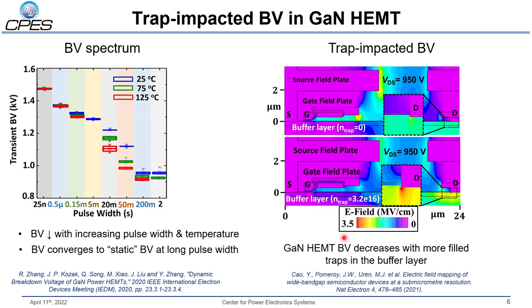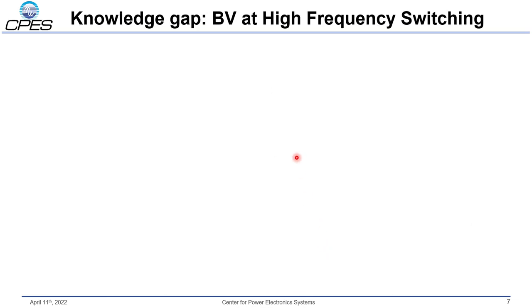There are also some experimental results tracking ionized traps and their influence on breakdown voltage, which you can find in our work in EDM and also in work from another group. We can see that there have been plenty of studies on overvoltage ruggedness of GaN HEMTs, but we still have knowledge gaps — especially regarding the breakdown voltage at high frequency switching.